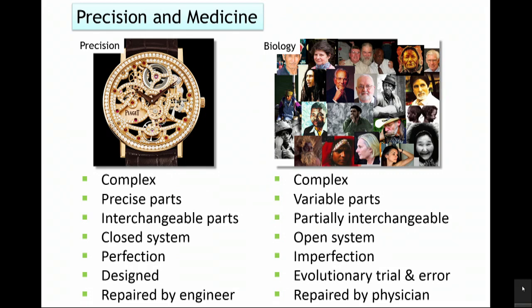If we contrast these two areas, both are complex. A watch is made of very precise parts that are stamped out, so that the corresponding part in one watch of the same type could be easily moved to the next. The parts in biology are recognizable — a liver is a liver, a heart is a heart — but there are individual differences if you look at them in any detail. So in the machine, the parts are interchangeable; in biology, the parts are partially interchangeable.